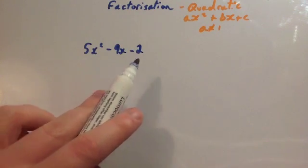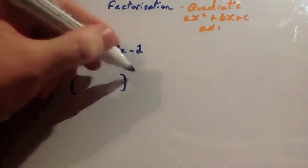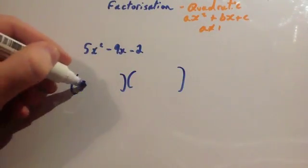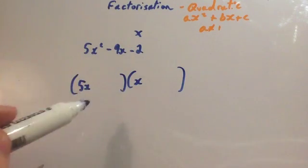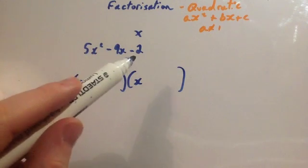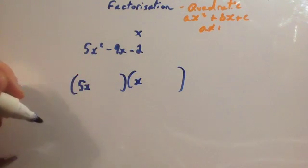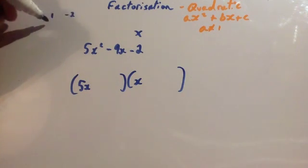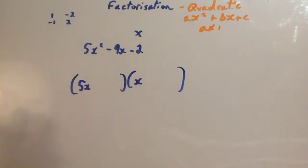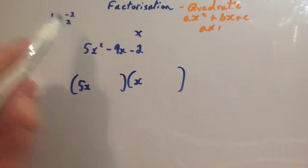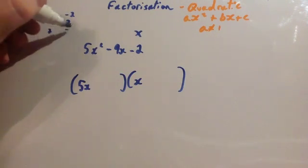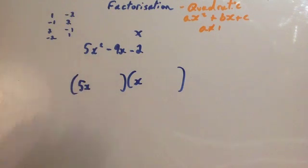We've been asked to factorize 5x squared minus 9x minus 2. Put your two brackets down. Because it's 5x squared — again a prime coefficient — that's going to be 5x and x. This time the numbers on the end will times together to give you minus 2. The options are 1 and minus 2, or minus 1 and 2. However, there are four arrangements because the order matters: 1 and minus 2, minus 2 and 1, minus 1 and 2, or 2 and minus 1. So there are four different options depending on which way around you put them in.